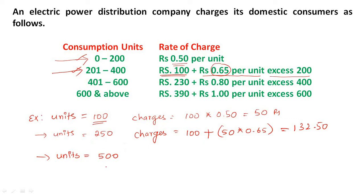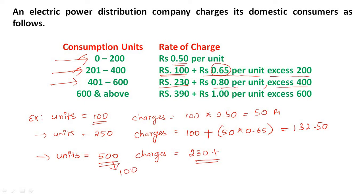Take one more example. If units is equal to 500, that falls in the third range. Charges equal 230 plus 0.80 per unit excess over 400. There are 100 excess units, so 100 into 0.80 gives 80. Total charges are 310 rupees. This is the formula we will use in the C language program.